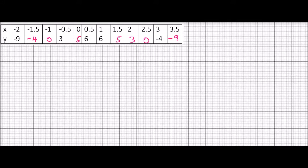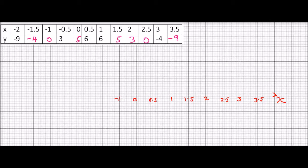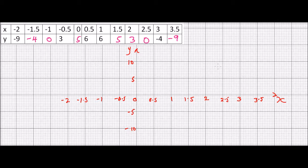This is the grid I'm going to use to plot the graph. The x-axis runs from minus 2 through minus 1.5, minus 1, minus 0.5, 0, 0.5, 1, 1.5, 2, 2.5, 3, and 3.5. The y-axis goes up to about 10, with markings at 5 and 10, and on the negative side down to minus 10, with markings at minus 5 and minus 10.